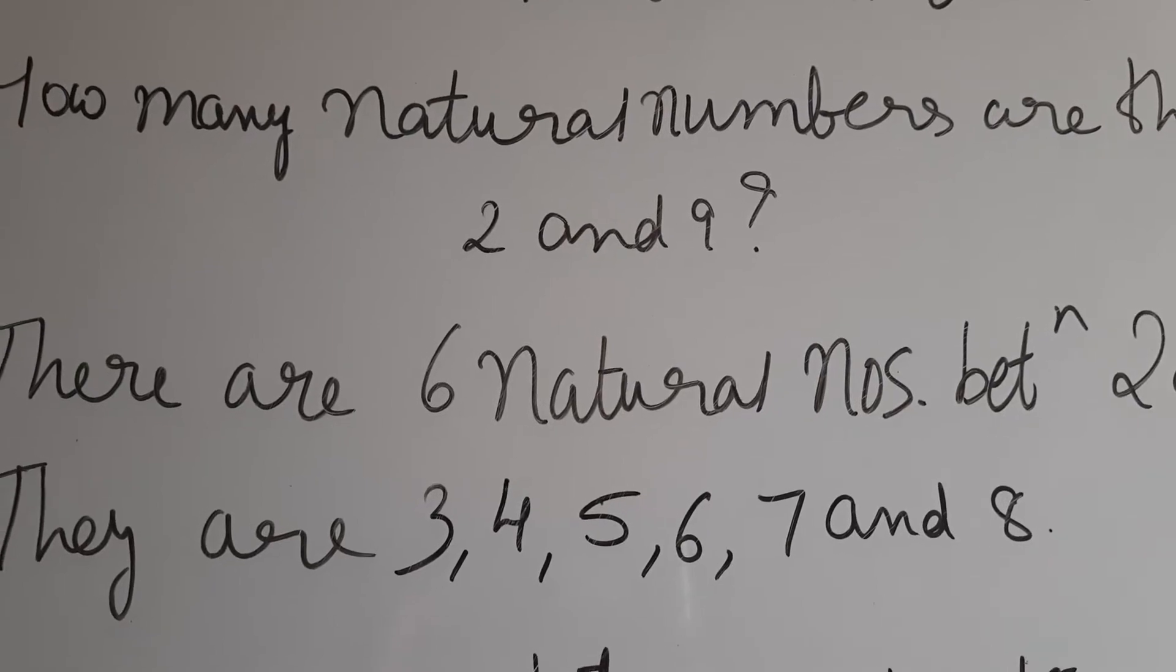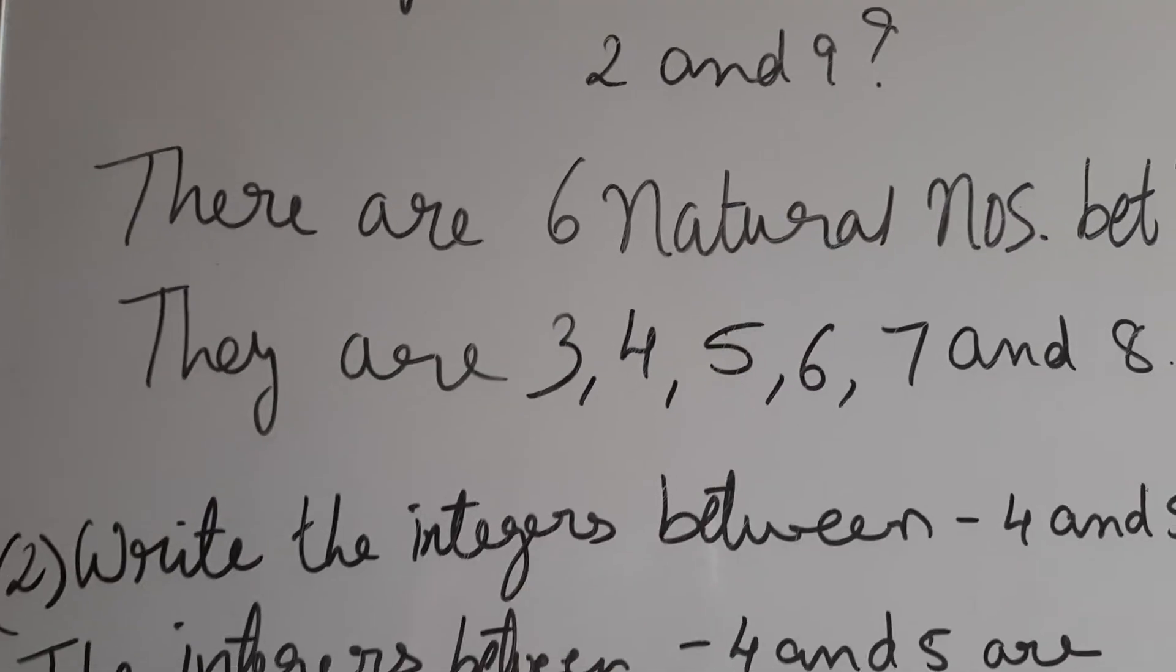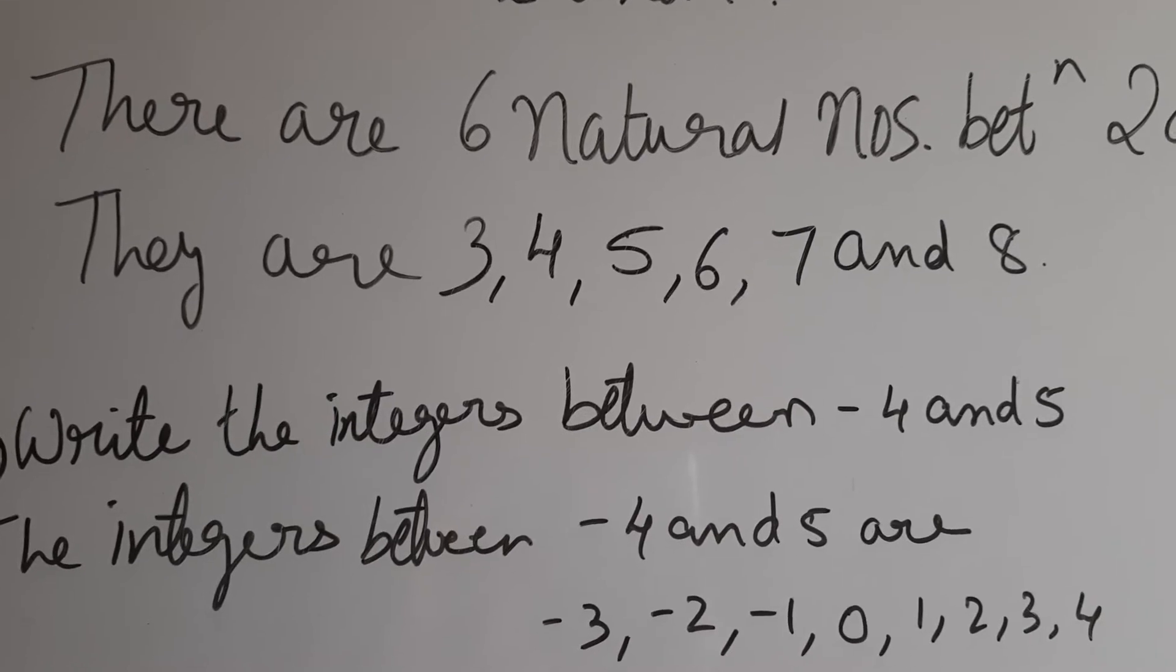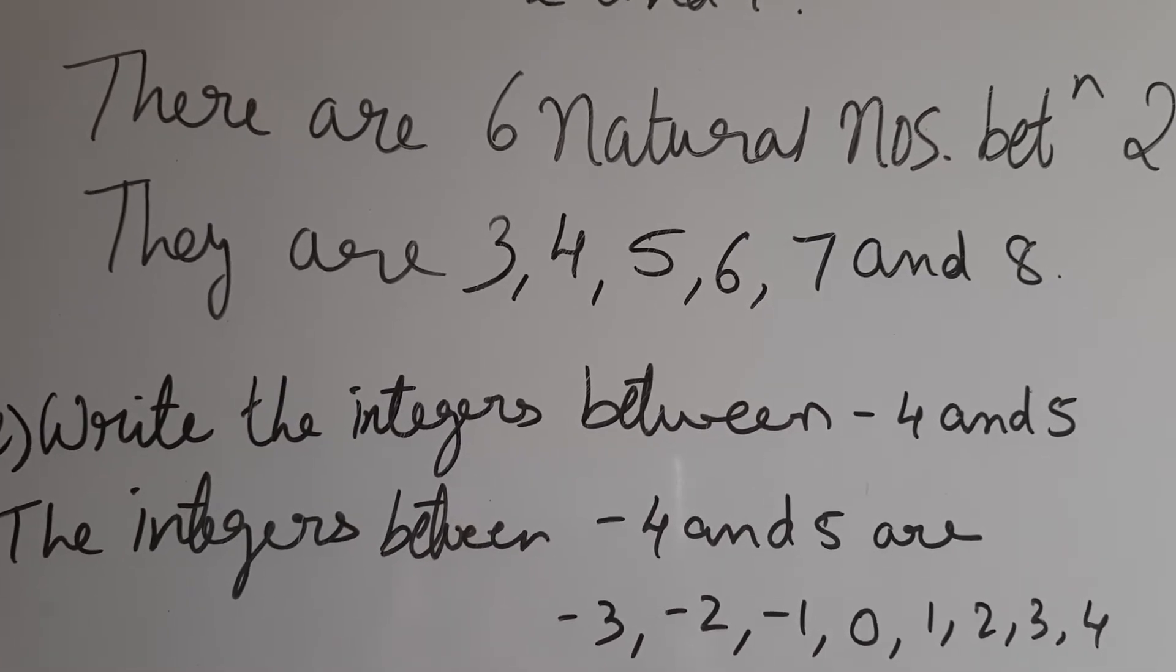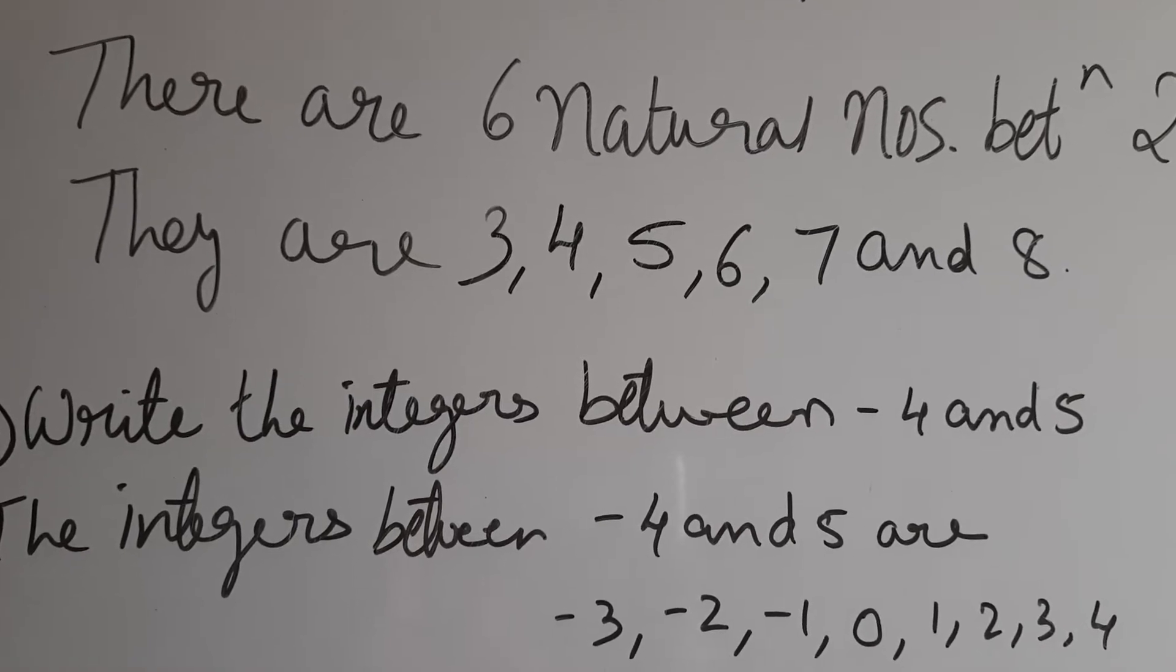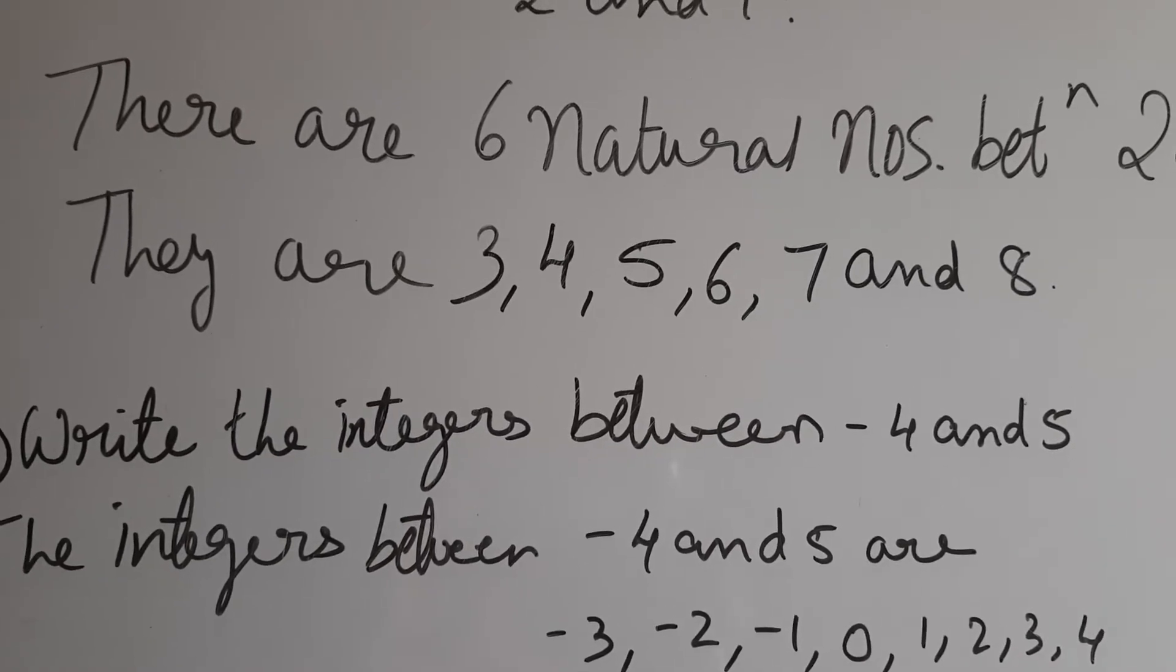But when it is a fraction, then we will see what we have to do. Write the integers between -4 and 5. So you have to remember the number line. -4 is on the left side of the number line and 5 is on the right side of the number line.